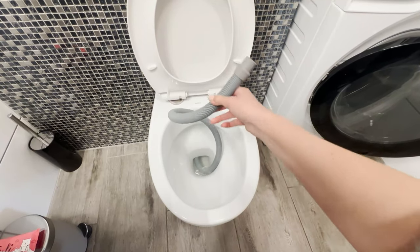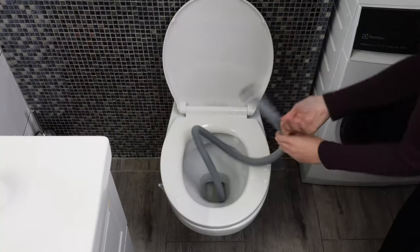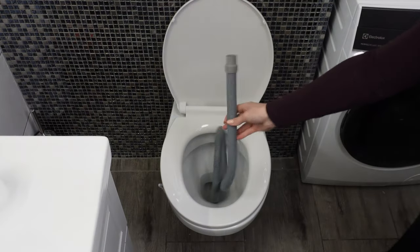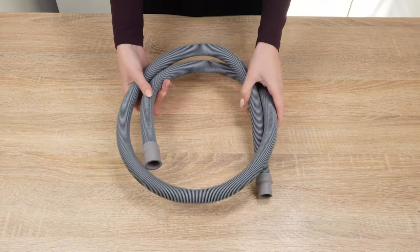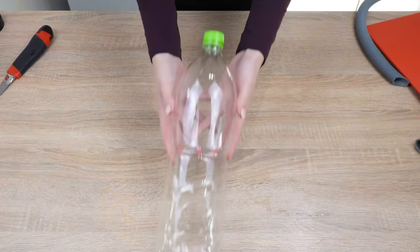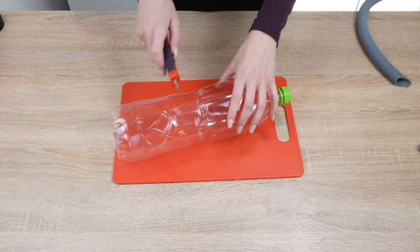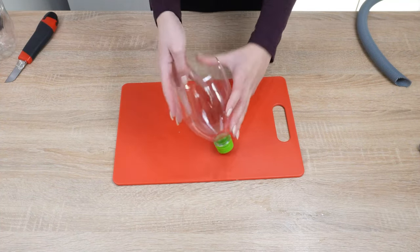Plumbers keep this from you. I inserted a hose into the toilet and got rid of the problem. If your toilet keeps clogging and emits an unpleasant odor, you don't have to call a plumber. All you need is a regular hose from a dishwasher or washing machine and an empty bottle. Start by cutting the bottle in half using a knife. Only the top part will be needed.